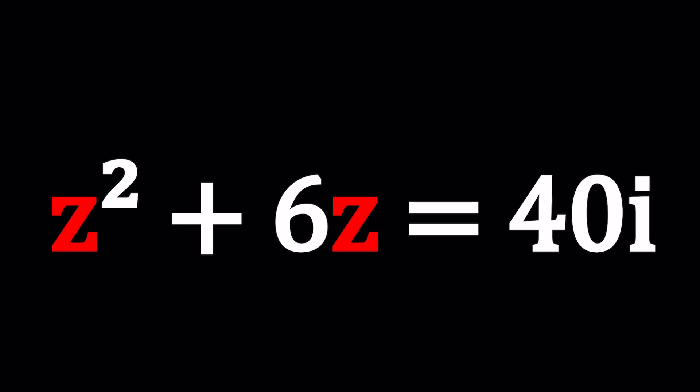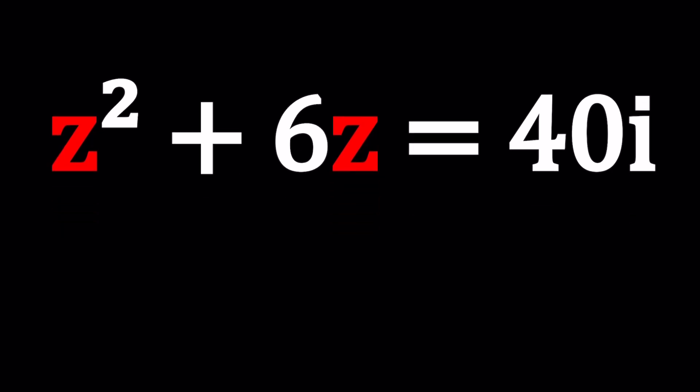So we have z squared plus 6z equals 40i and we're going to solve for z because i is a constant. In case you didn't know, i is a number whose square equals negative 1 or you can define it as one of the square roots of negative 1. If you're new to complex numbers, go ahead and check out my lecture videos. I made a playlist. So how do we solve this problem in two different ways?